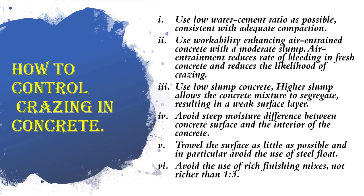Use as low a water-cement ratio as possible, consistent with adequate compaction. Use workability-enhancing air-entrained concrete with a moderate slump; air entrainment reduces the rate of bleeding in fresh concrete and reduces the likelihood of crazing. Use low-slump concrete, as higher slump allows the concrete mixture to segregate, resulting in a weak surface layer.